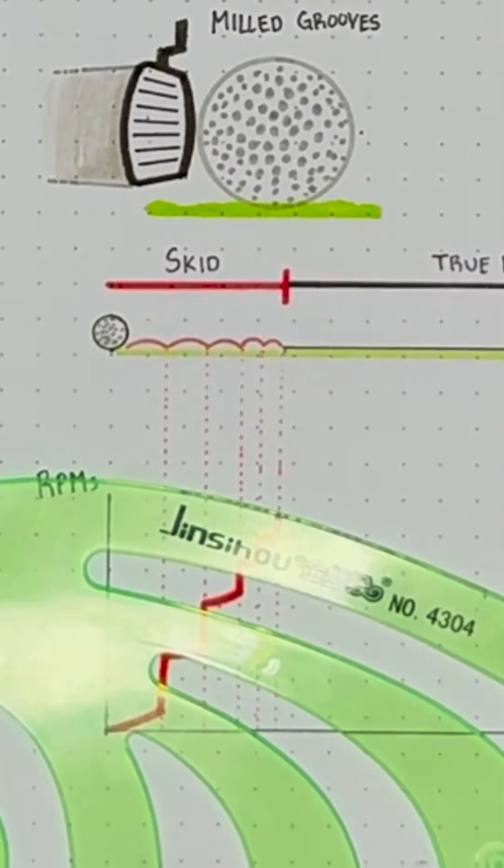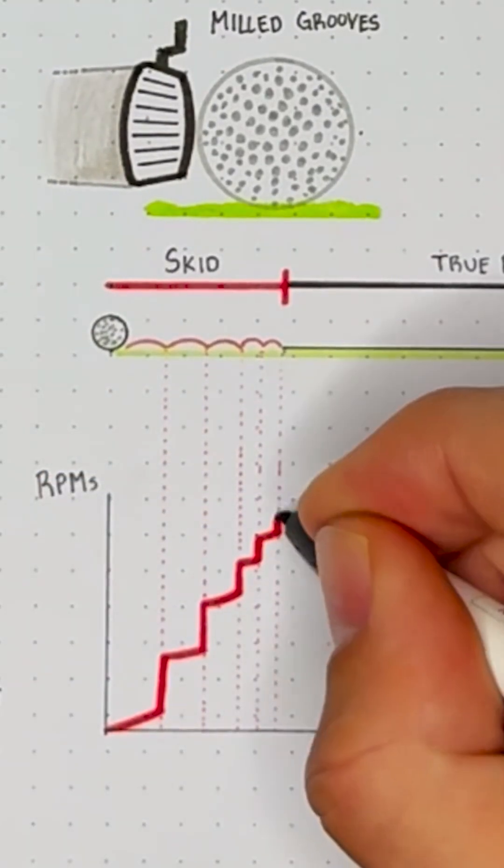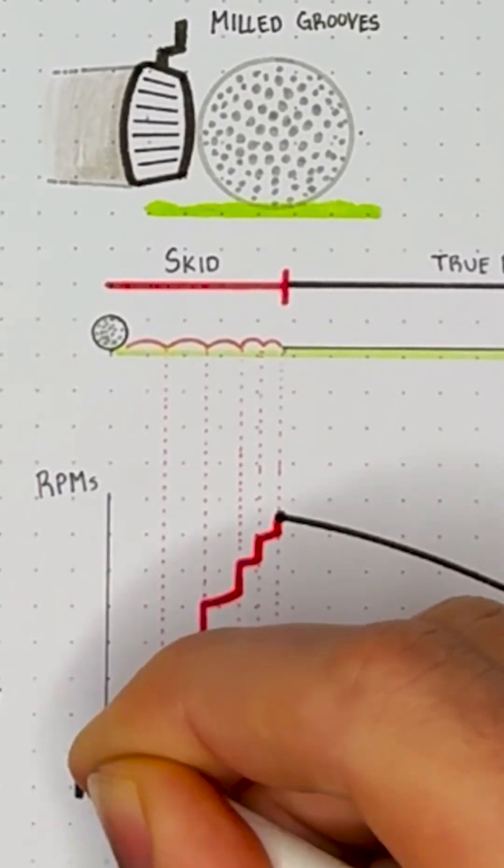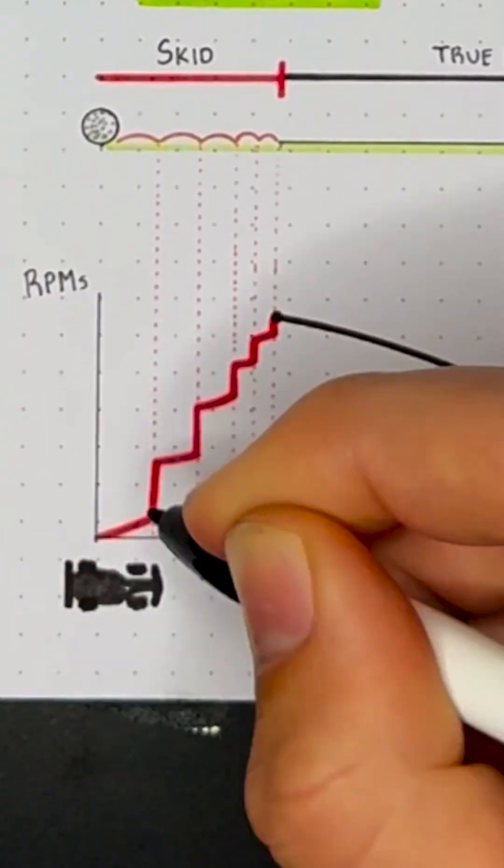The problem is, in this skid zone, there's almost no control on the ball, and you get a lot of randomness in the putt.